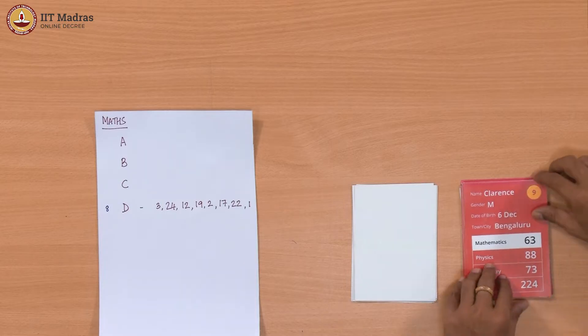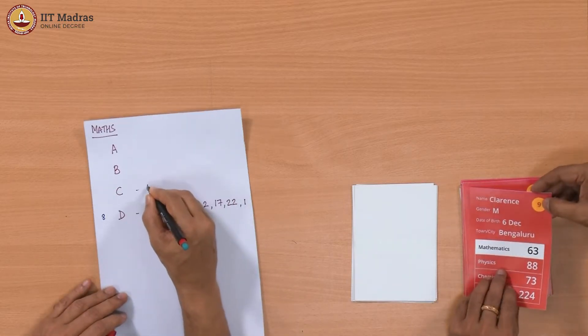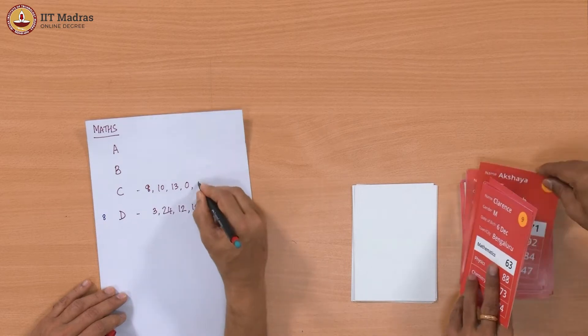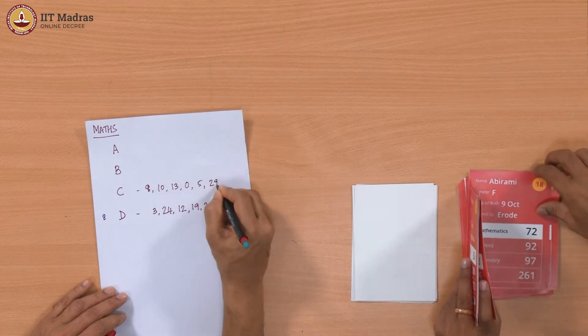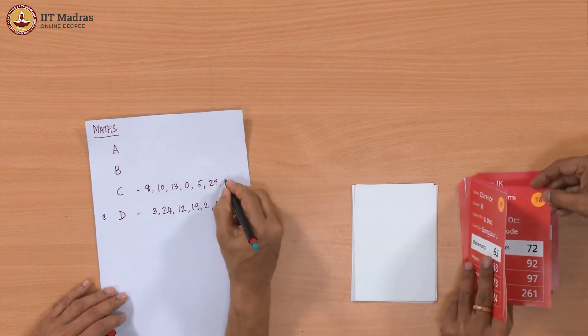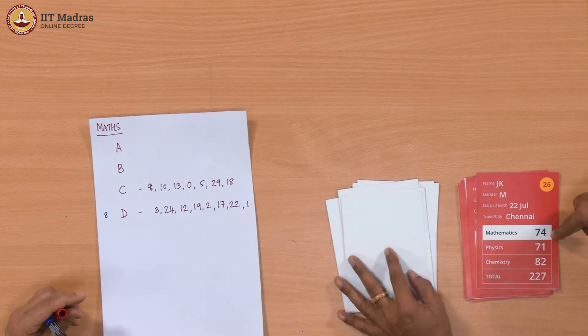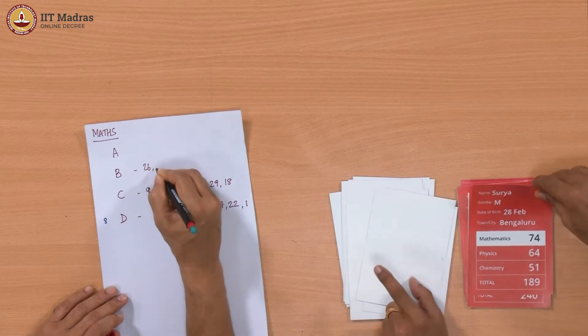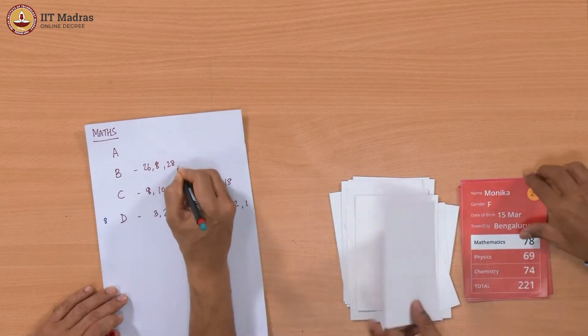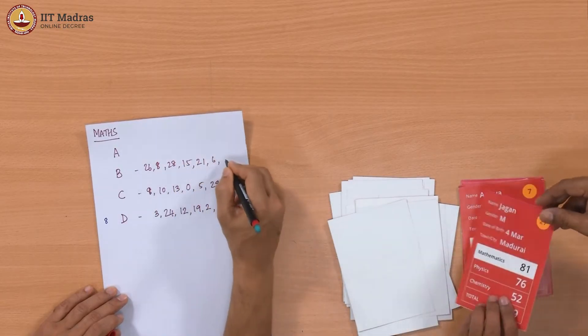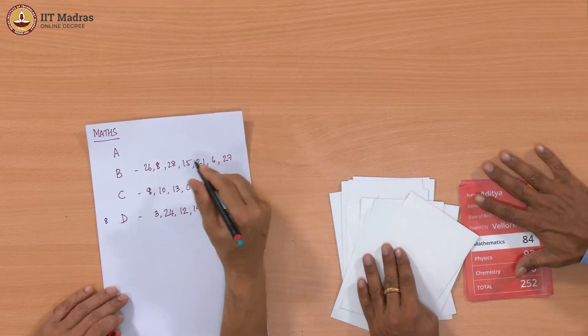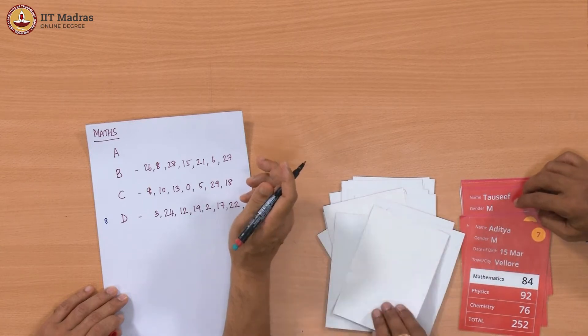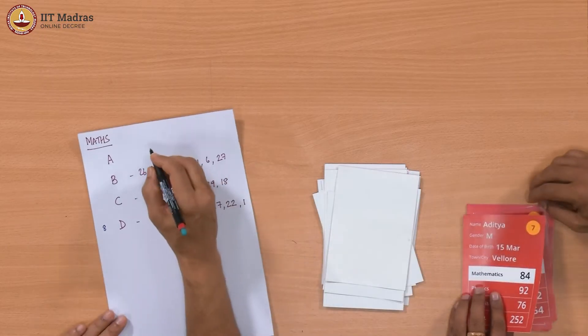Now we are going to C. So 63, oh sorry 9, then 10, 13, 0, 5, 29 - how many have you got? I have got 6 or maybe 1 more, 18. So the bottom half will be C or D. And now we have got 74 which is alright, this is 72. Now we go to B: 26, 8, 28, 15, 21, 6, 27. So we have got 7. We could go one more or we could stop here. This is 84. I think this was 81, so I think we should stop.